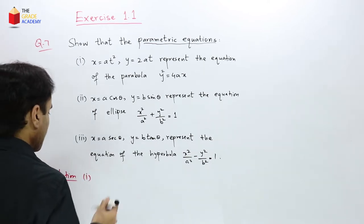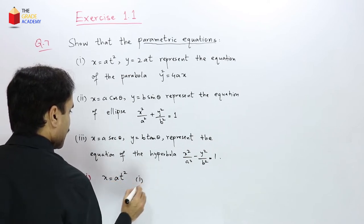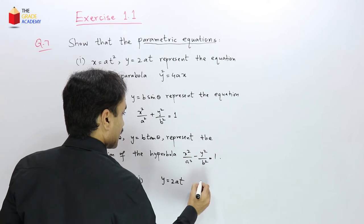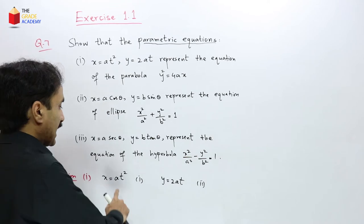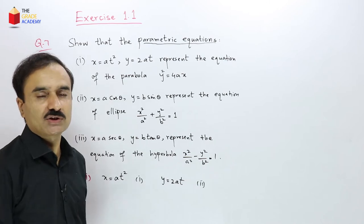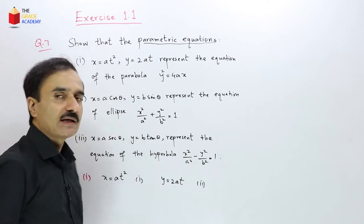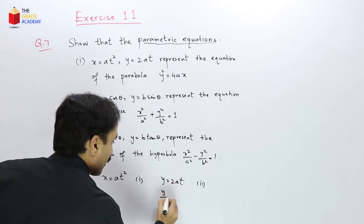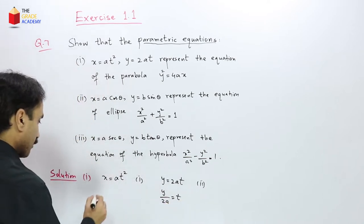We have x = at² as equation 1 and y = 2at as equation 2. We need to eliminate the parameter t. The procedure is: from one of the equations find the value of t, then substitute into the other. From equation 2, we get t = y/(2a). Now put this value in equation 1.